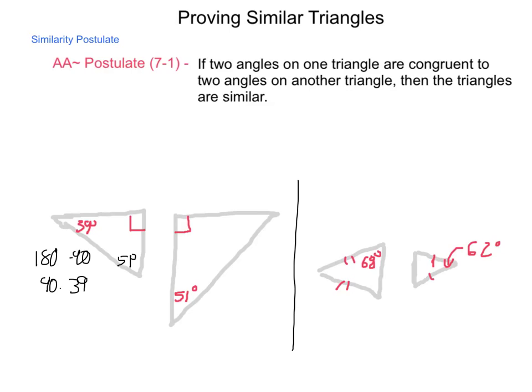So this missing angle is 51 degrees. We now have the right angles being congruent and this 51 degree angle being congruent. That means that these two triangles are similar. So we can simply say, yes, they are.